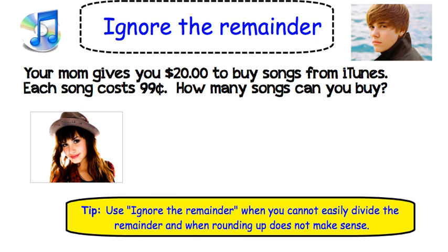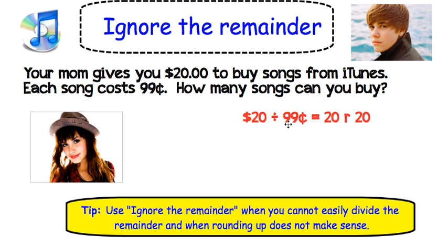The first choice is ignoring the remainder. Here is an example. Your mom gives you $20 to buy songs from iTunes. Each song costs $0.99. How many songs can you buy? First, we would do some division. 20 divided by 0.99 equals 20 remainder 20.